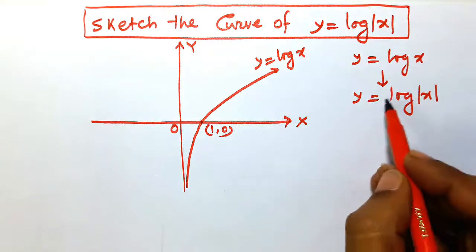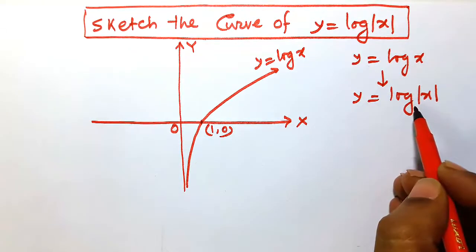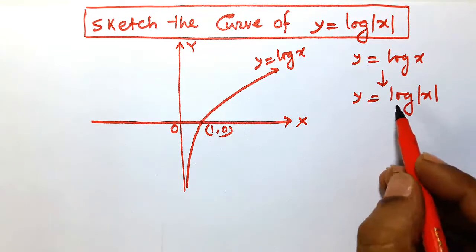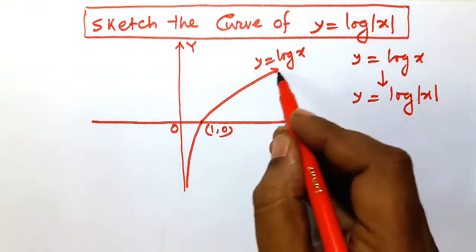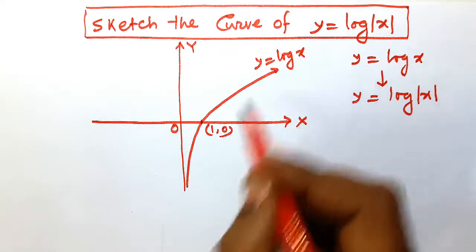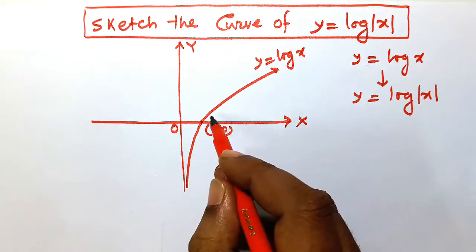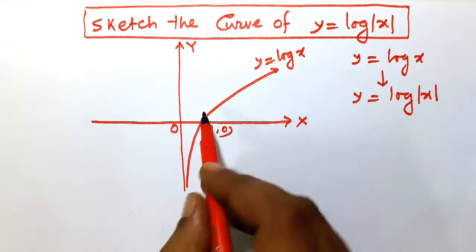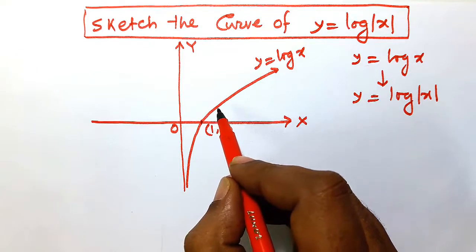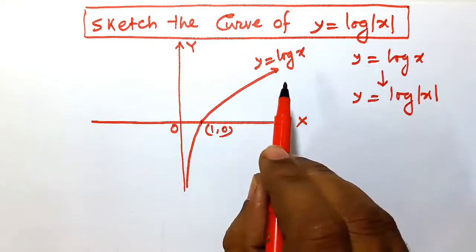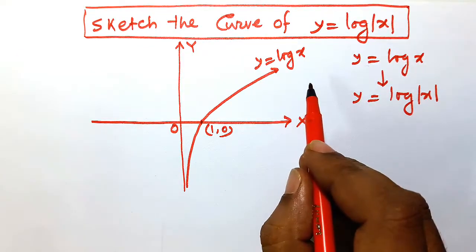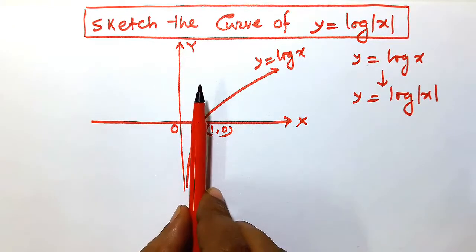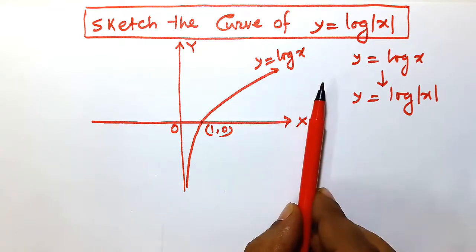Now to draw the curve for y = log|x|, we shall follow some steps. First, note the positive and negative parts of y = log(x). Step one: leave the graph lying on the right side of the y-axis as it is.